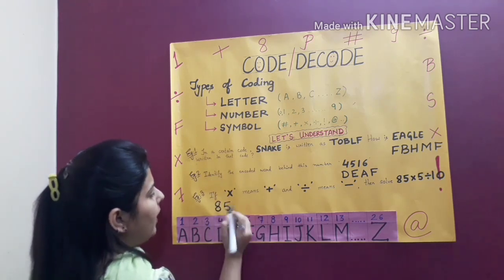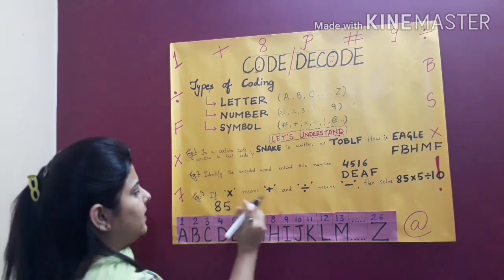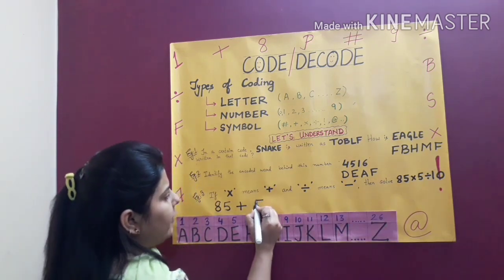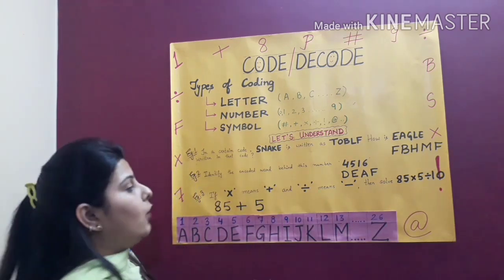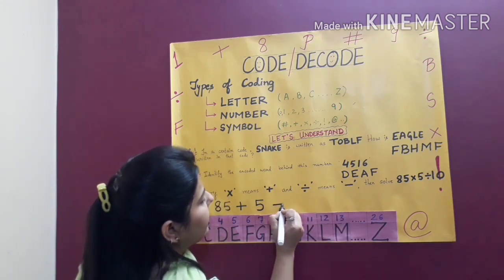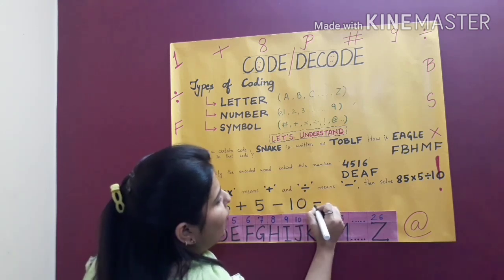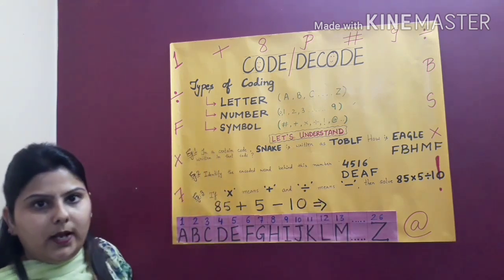Now let us start from here. 85. Now multiply sign is plus. So make it plus. Then the number is 5. So write 5 here. Now divide is minus. So make a minus sign here. And write 10 after this. Now when you solve this, what will you get?